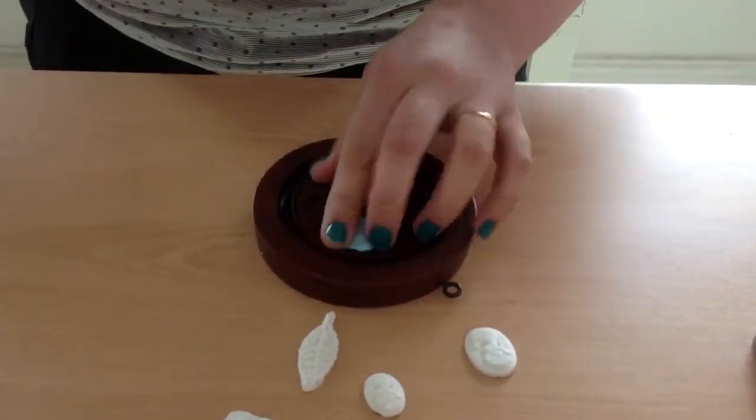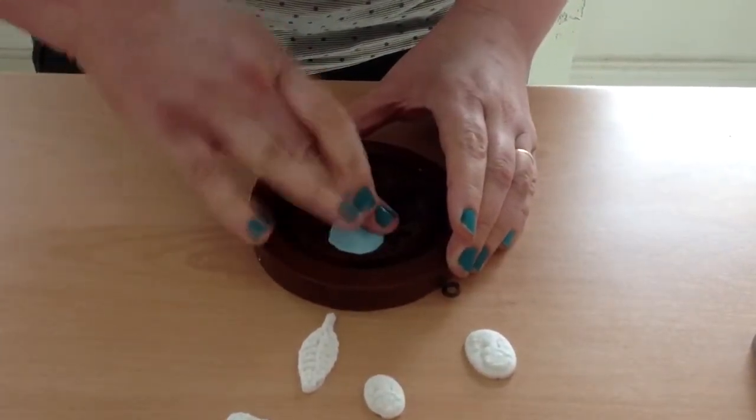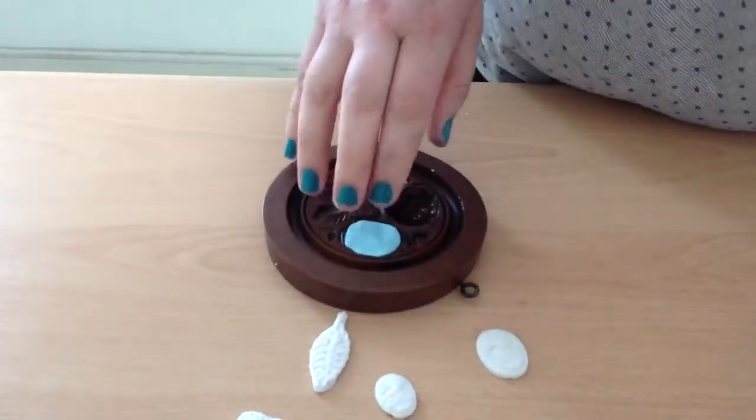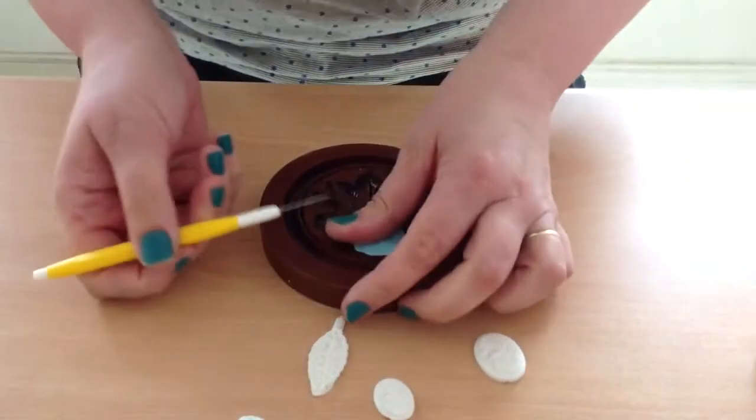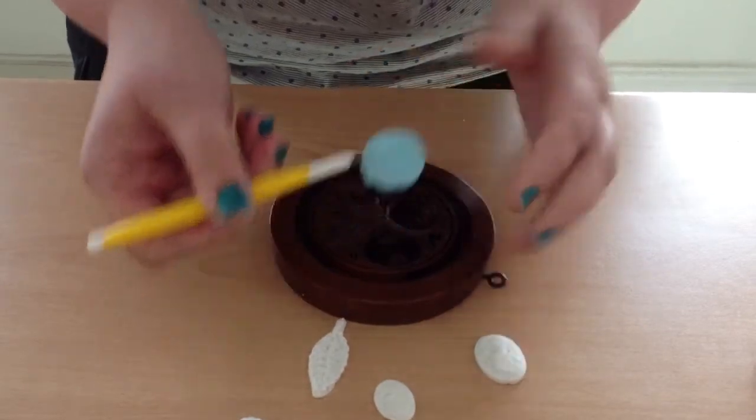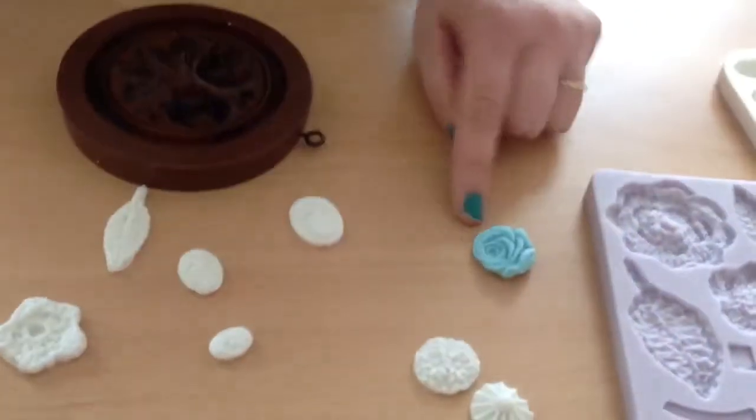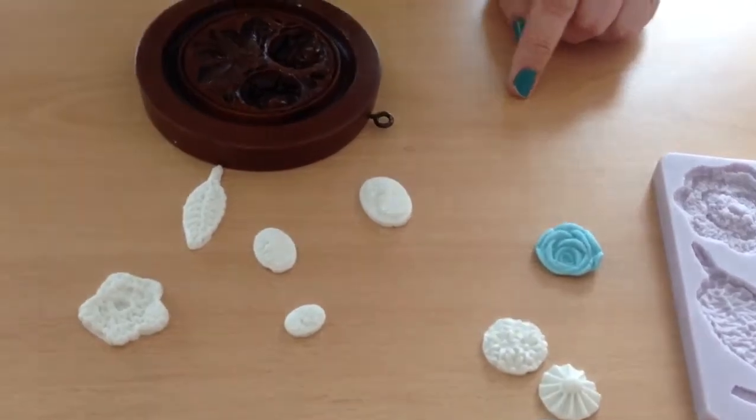Pop it in the rose for you. And with this one, because it's got quite a lot of deep undercuts, you do sometimes need a little scriber tool to just pick it out. But you can see how quick that was.